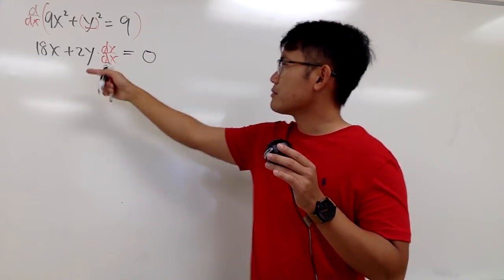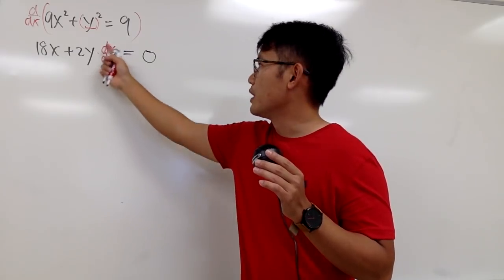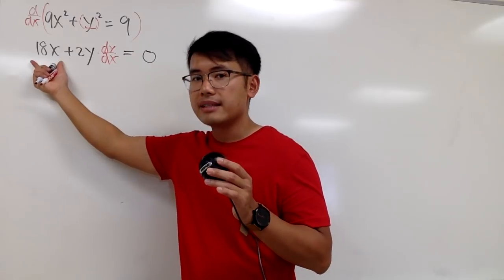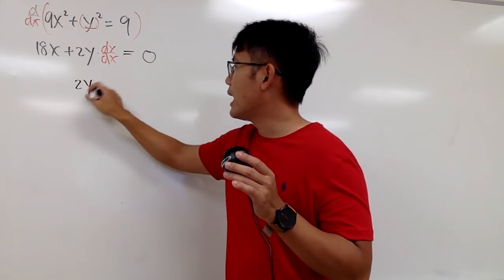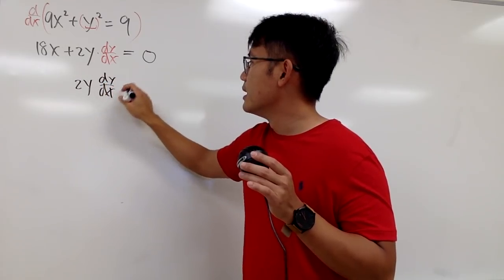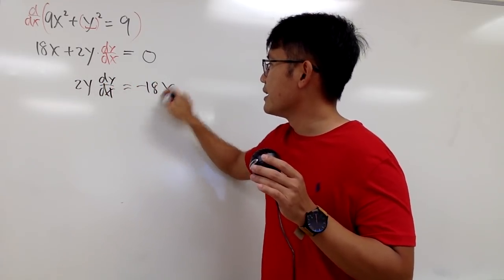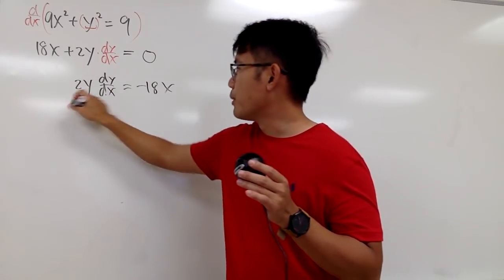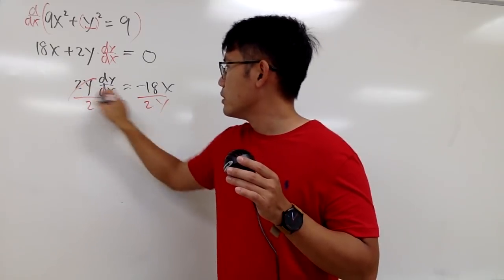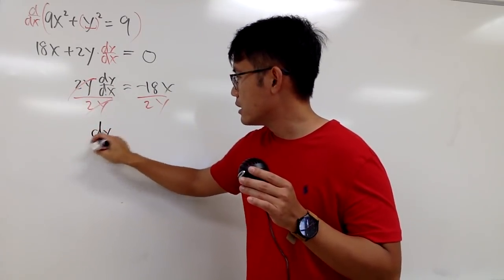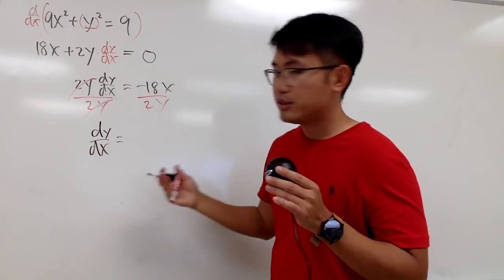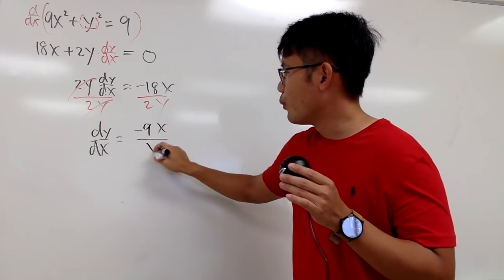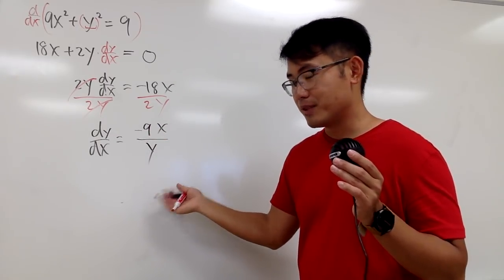This is the first derivative. We can isolate dy/dx: bring 18x to the other side, so 2y dy/dx equals negative 18x. Dividing both sides by 2y, we get dy/dx equals negative 9x over y.